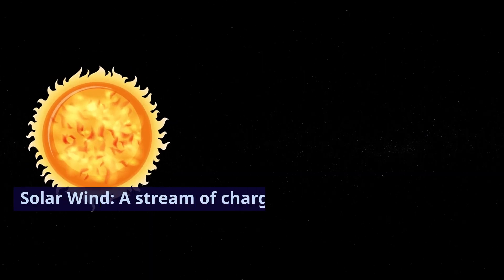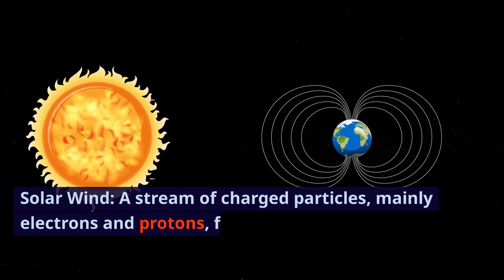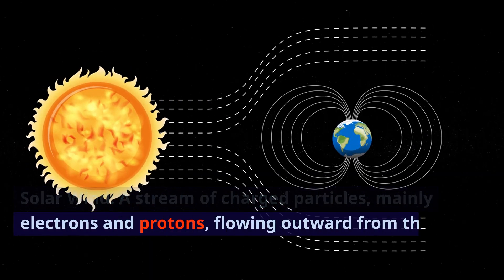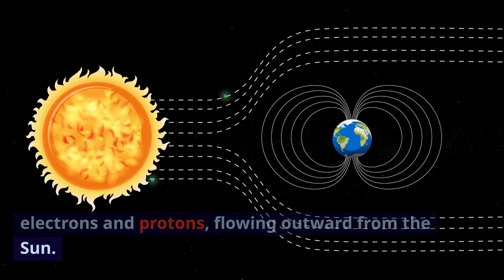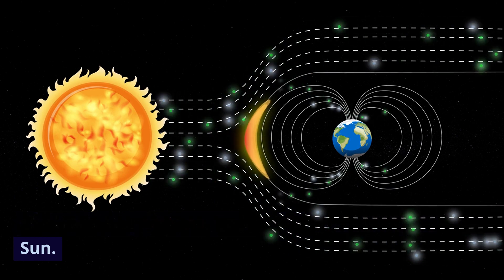Solar wind: a stream of charged particles, mainly electrons and protons, flowing outward from the Sun.